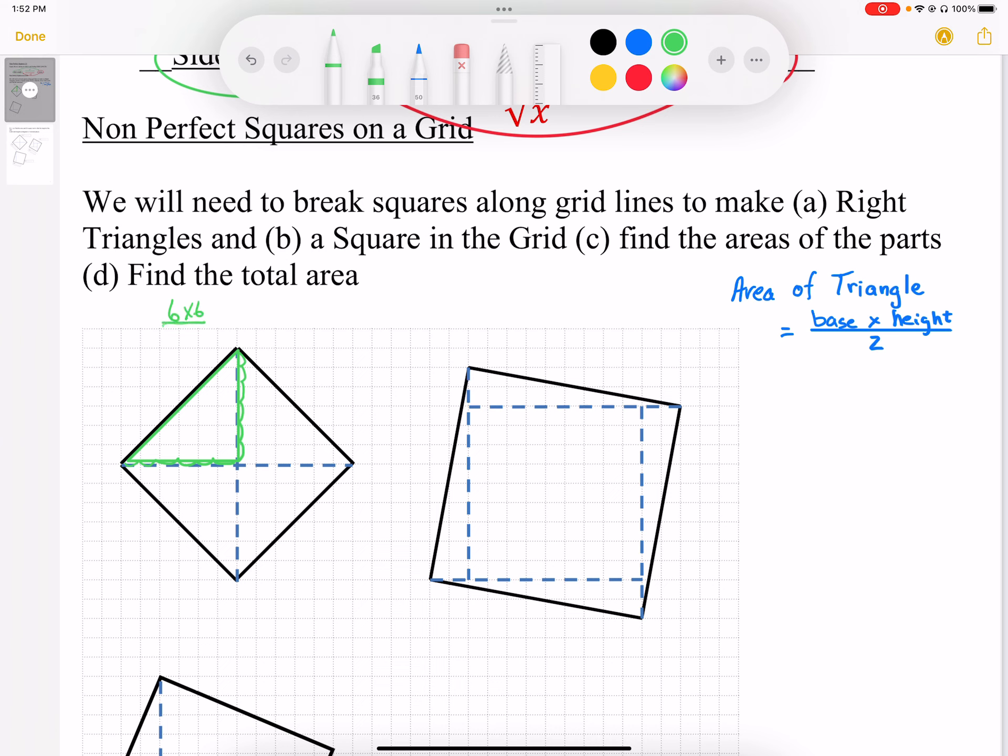But because it's only half a square, we only want to take half of that. So 6 times 6 would give us a rectangle, but we only want half of this to get the triangle. So 6 times 6 is 36. 36 divided by 2 works out to be 18 squares.